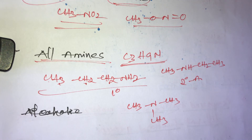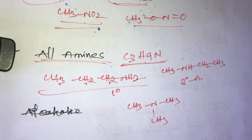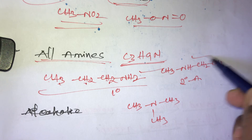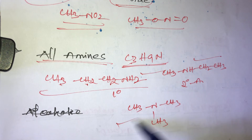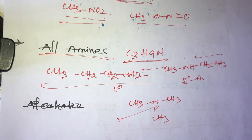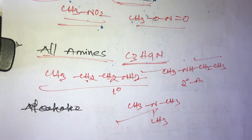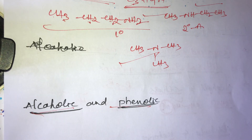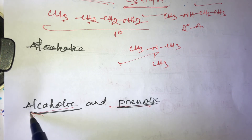A tertiary amine example is CH3N(CH3)CH3. All three amines — primary, secondary, and tertiary — have the same molecular formula C3H9N but different functional groups, so they all belong to functional isomers.